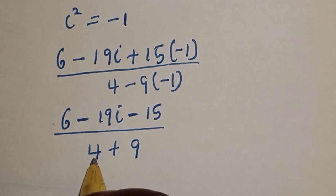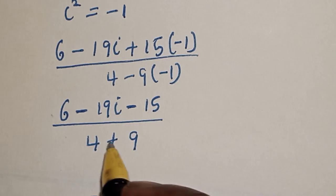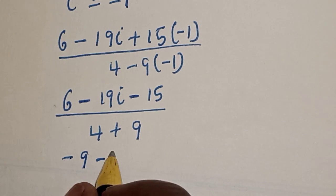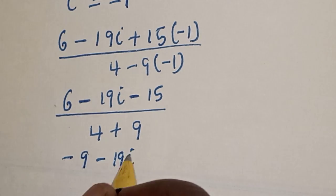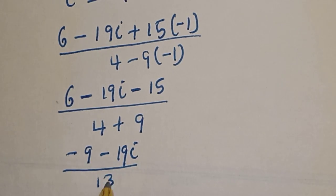Now, this is 6 minus 15. That would be minus 9. So, we have minus 9 minus 19i over 4 plus 9. That is 13.